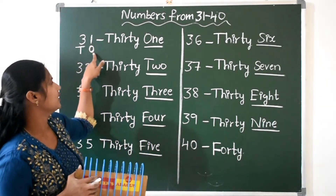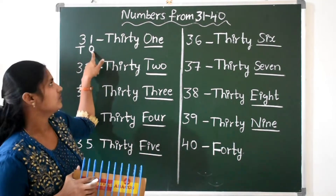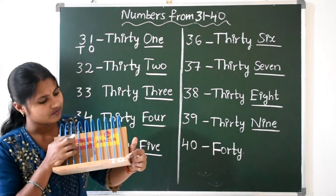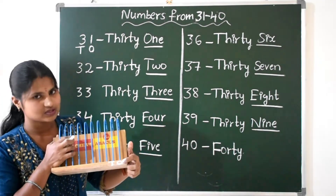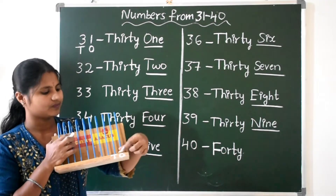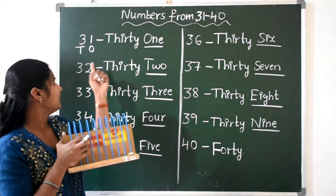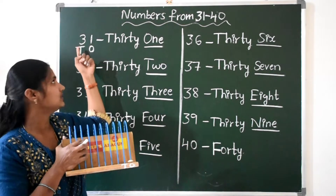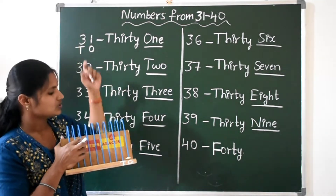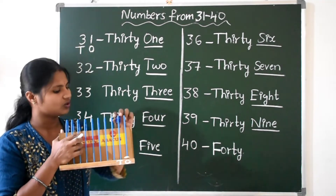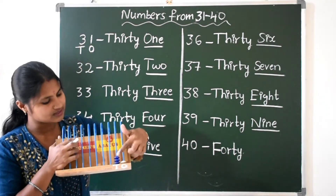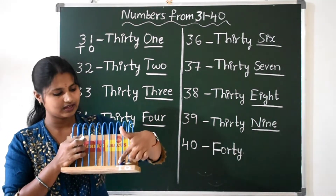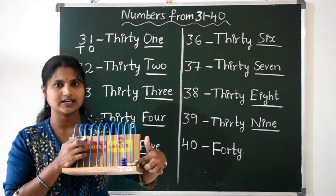In the ones place, how many beads? O means ones place. In ones place, 1 bead. In tens place, how many beads do we have to place? 3, because there are 3 tens. So, tens place: 3 beads. 3 and 1 makes 31.